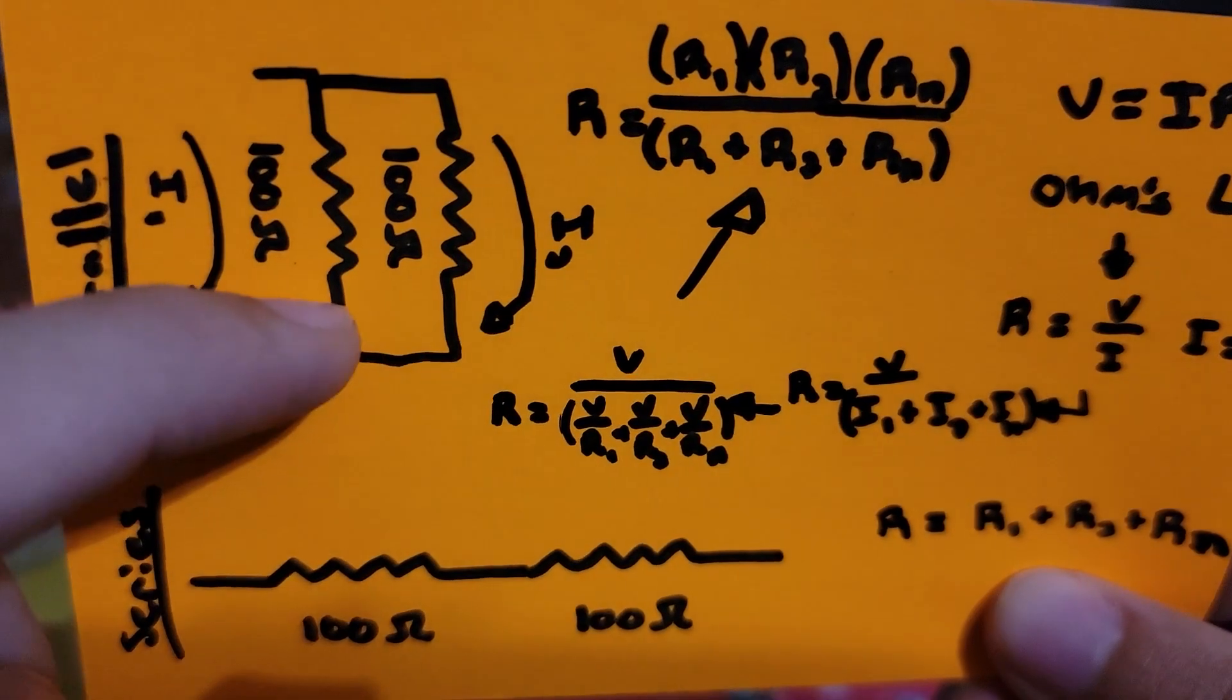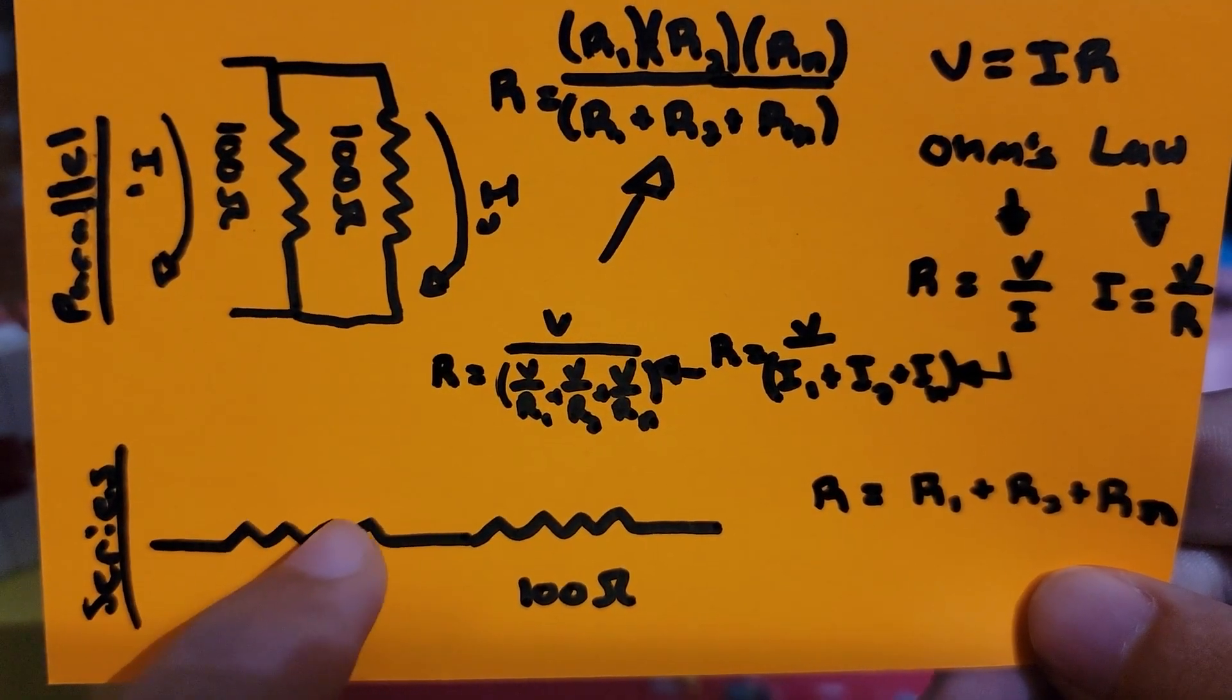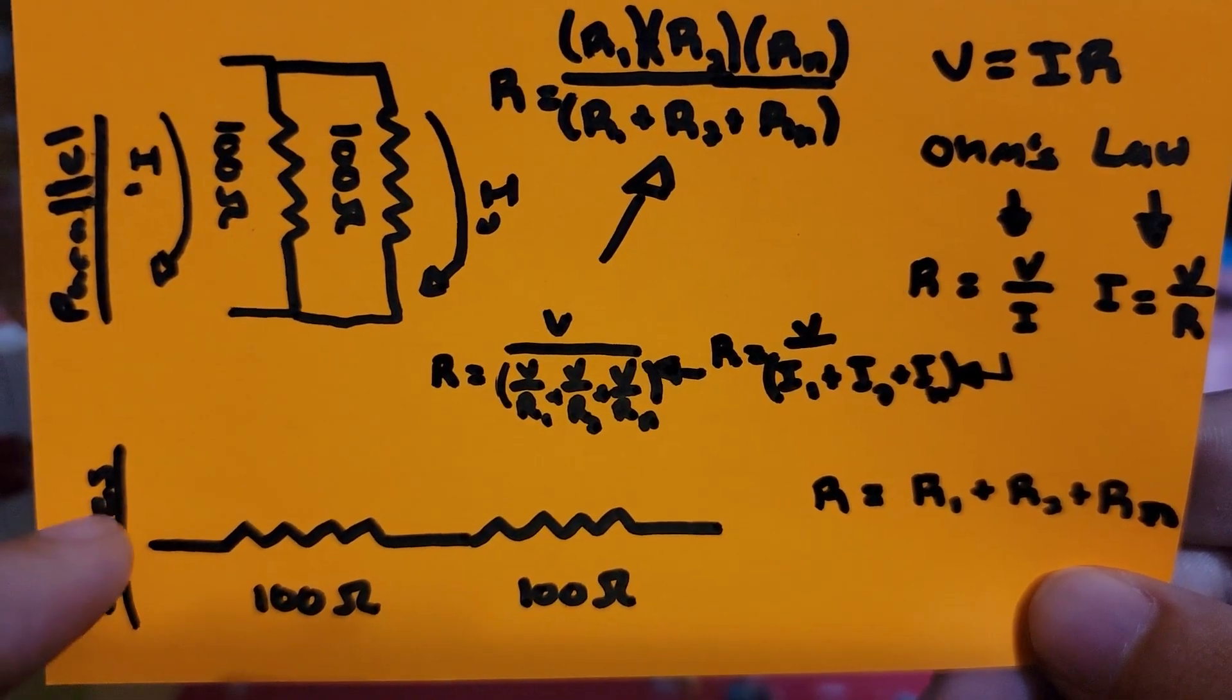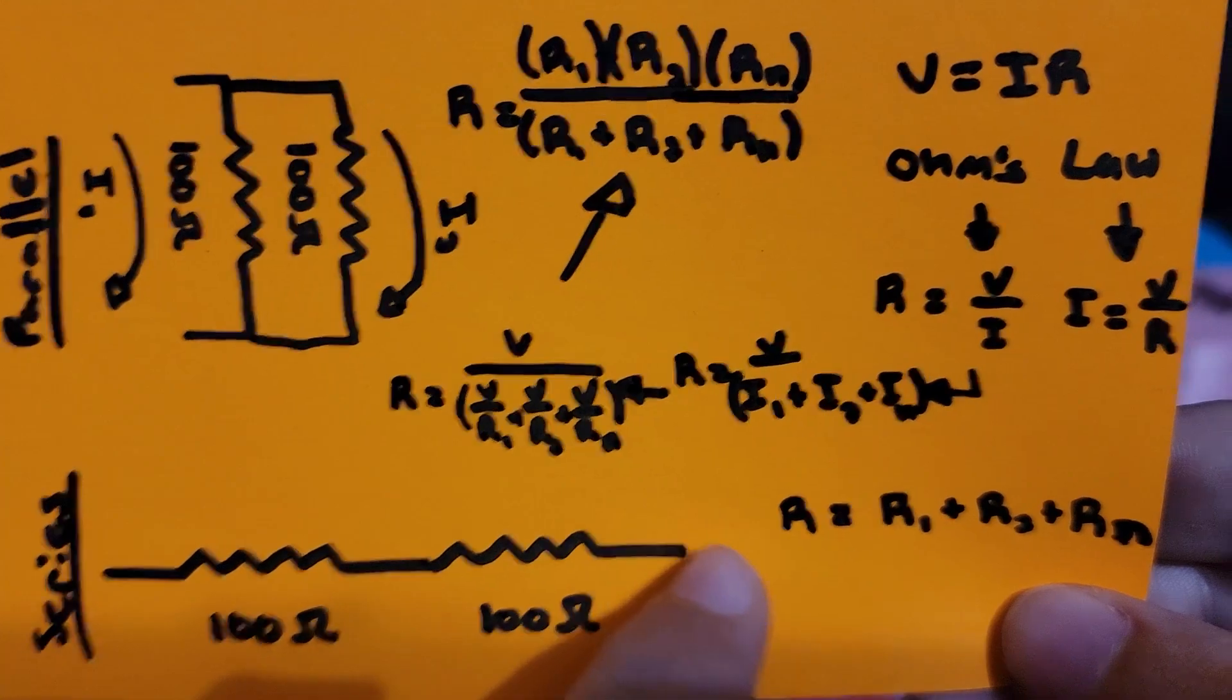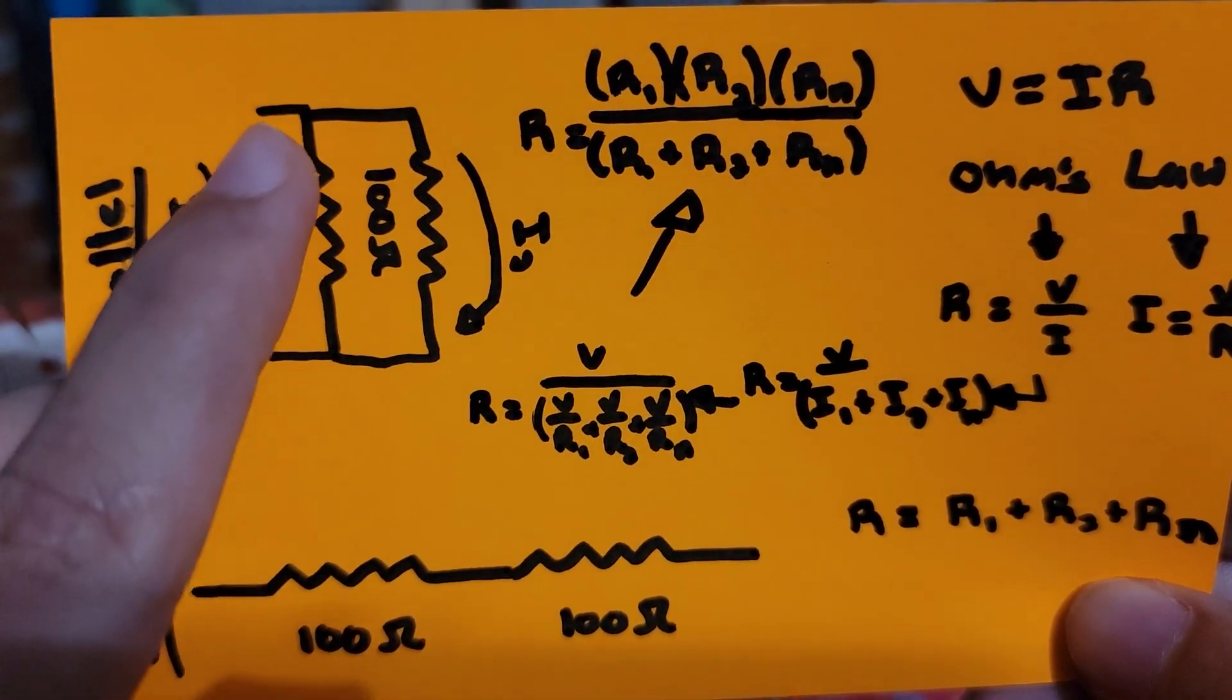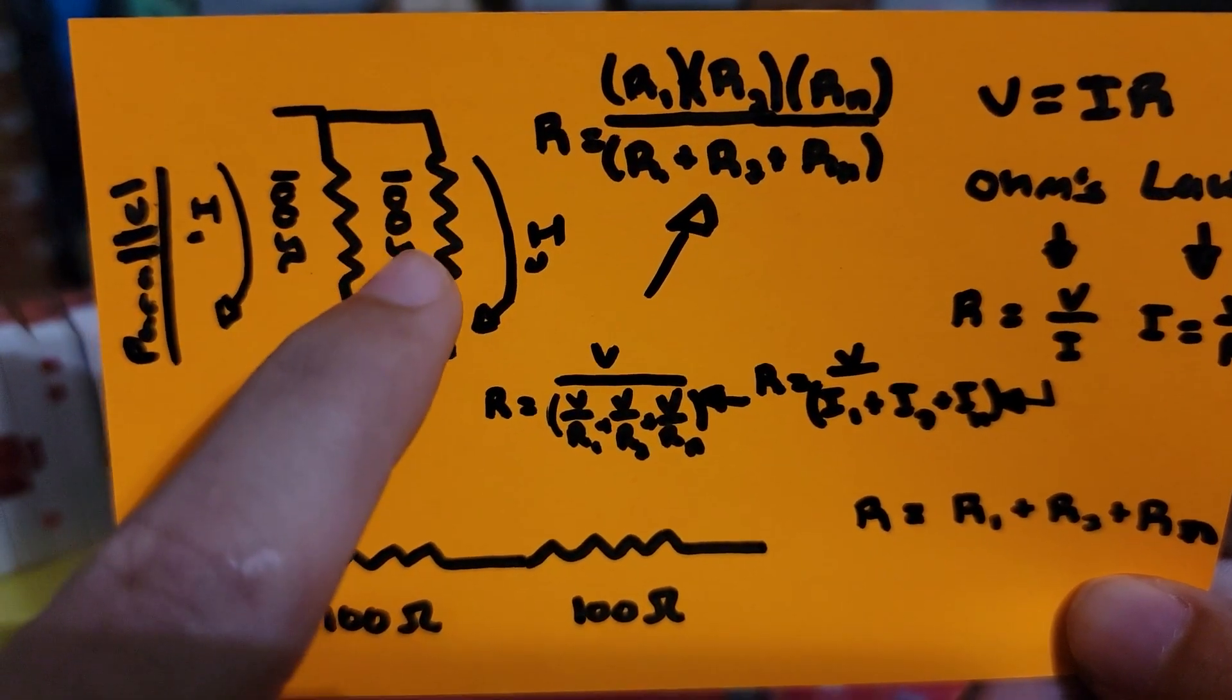You can think of current as water flowing through a hose and resistance as kinks within that hose. When connected in series, this resistance or kinks within the hose adds up. But if you had one main hose with these kinks connected in parallel, the water or current will be able to flow through these circuits, making total resistance less.